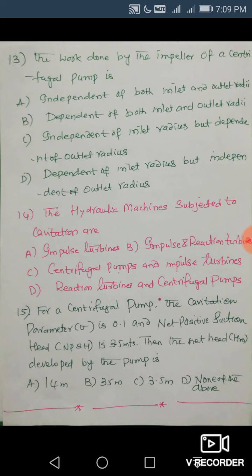Question 15: For a centrifugal pump, the cavitation parameter σ = 0.1 and NPSH = 3.5 meters. Find the net head Hm developed. The relationship is: NPSH_min = σ × H. So H = NPSH / σ = 3.5 / 0.1 = 35 meters. Answer is B.